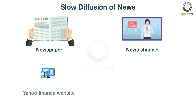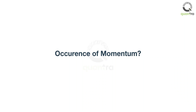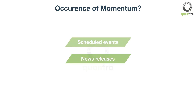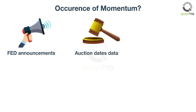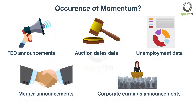Information flow, analysis, and reaction is not symmetric. Everyone analyzes the news and takes action at a different pace, and this results in momentum. This momentum can be seen on scheduled events or during news releases — for example, Fed meetings, auction dates, release of economic data such as unemployment data, and corporate earnings announcements.